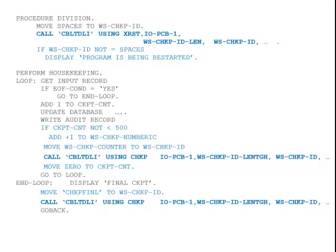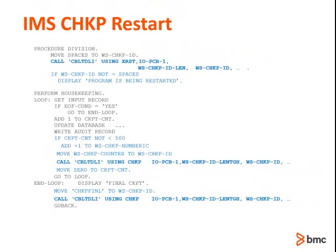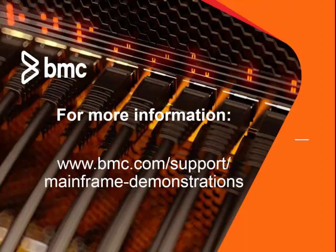Finally, normal program execution will resume. Because checkpoint 22 was returned from the XRST call, it will not be equal to spaces, so the program will display a message indicating that a restart is in progress. The program will then enter its main loop and resume processing, but since the input and output files have been repositioned, only the portion of the data after checkpoint 22 will be processed on the restart. This concludes the discussion on IMS checkpoint implementation and usage. It is important to understand these basic concepts, even for non-IMS users, so we can better discuss how ARC implements checkpoint restart. The next topics will discuss how ARC builds on the concepts pioneered by the IMS Extended Restart Facility.